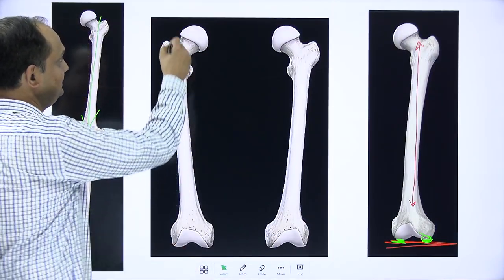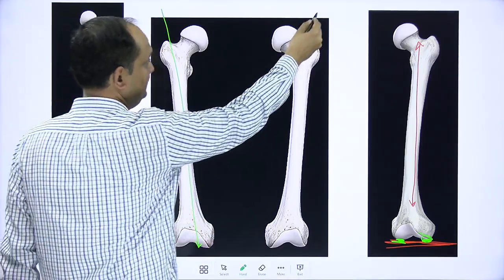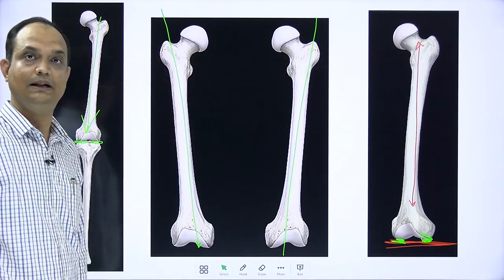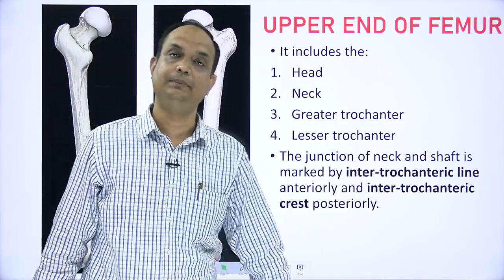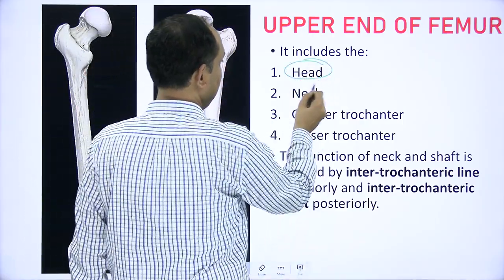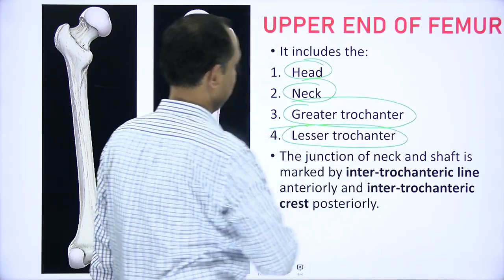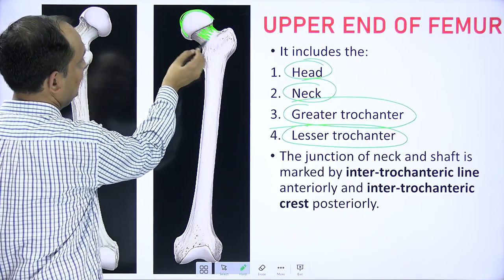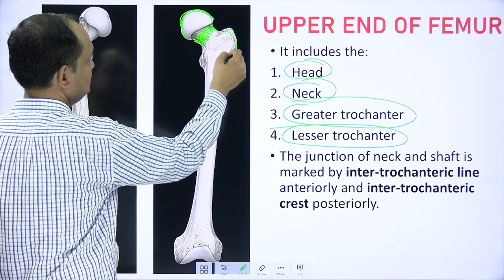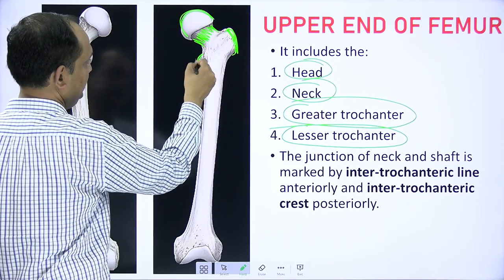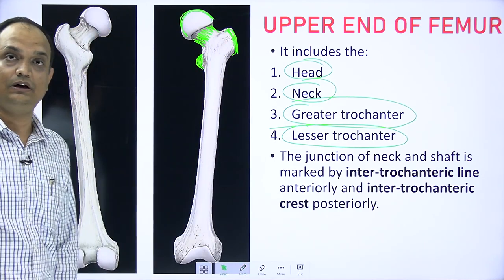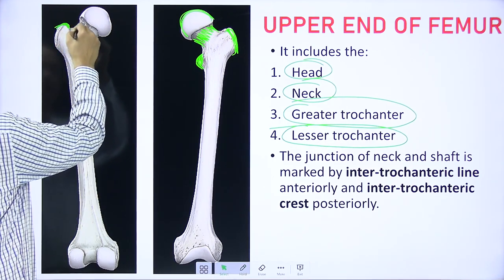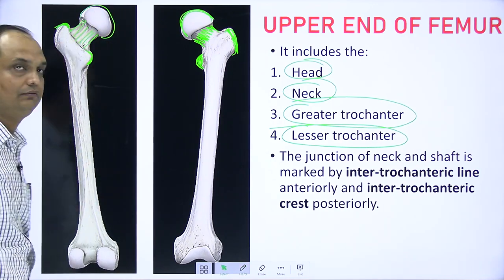Holding the individual femur with the shaft oblique, the lower ends are medial and upper ends are lateral. The upper end has four features: a head, a neck, a greater trochanter, and a lesser trochanter. The head is the rounded part, the neck connects head to shaft, the greater trochanter is the large projection, and the lesser trochanter is the small projection on the medial side.